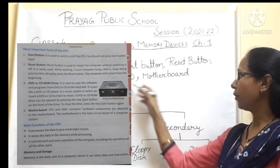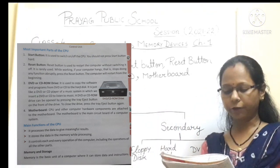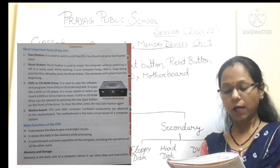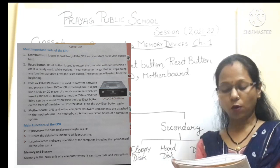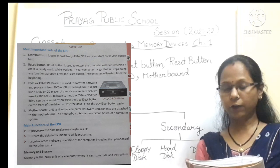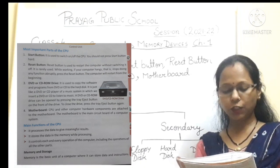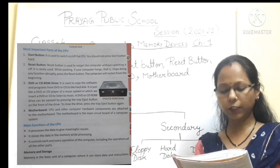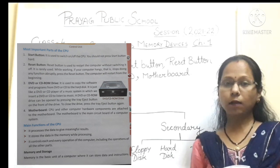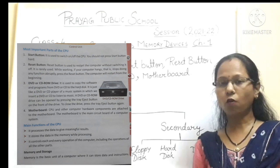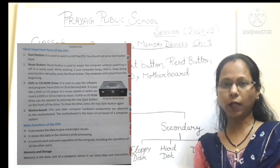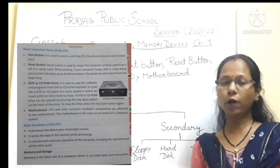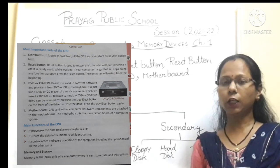Next is the DVD and CD ROM drive. It is used to copy software and programs from DVD and CD to the hard disk. ये किसी भी चीज़ को copy करने के लिए use होता है. It is just like a DVD and CD player of a music system in which we insert a DVD or CD to listen to music — जैसे कि CD DVD player होता है जिसमें आप CD लगाकर उसको देखते हैं.